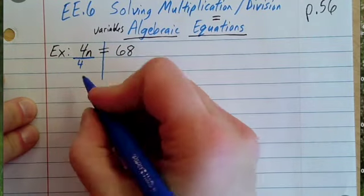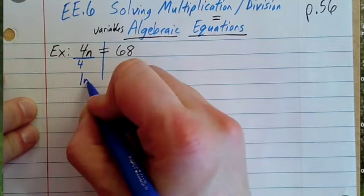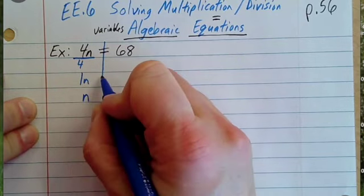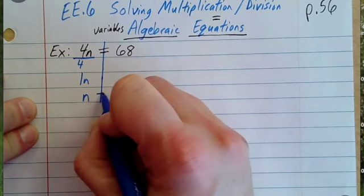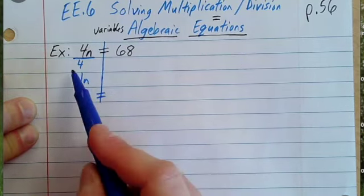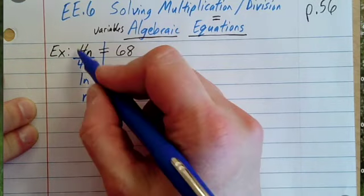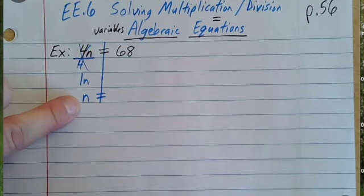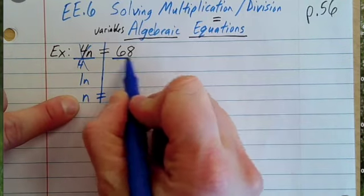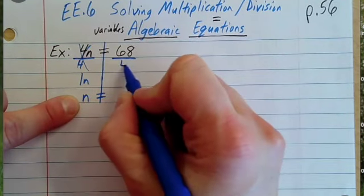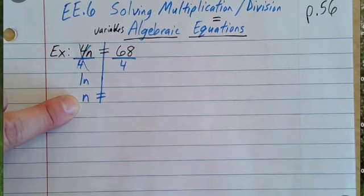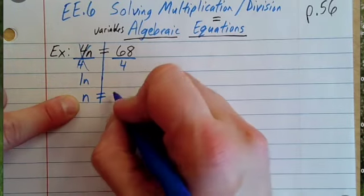4 divided by 4 gives me 1n. 1 times n is just n, which is great — we want to get n by itself, and we did that by dividing by 4. It essentially cancels out the 4s, which gets n by itself. If we divide by 4 on this side, then we need to take 68 and divide by 4 on this side. 68 divided by 4 gives me 17.